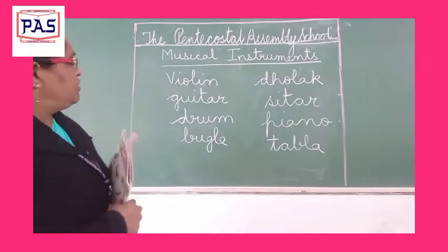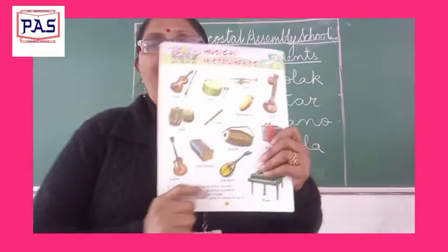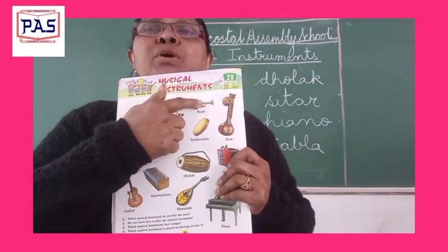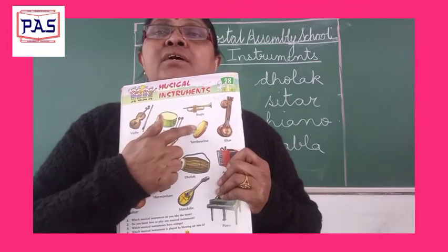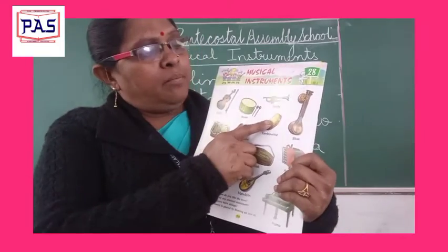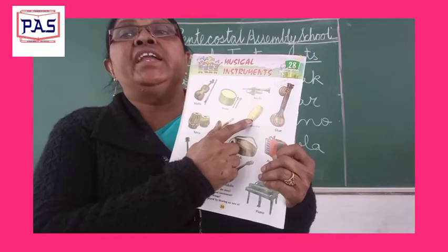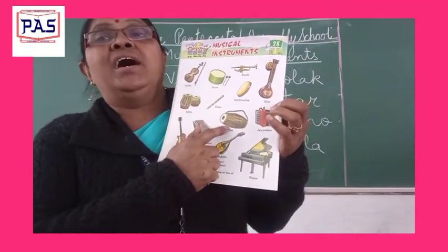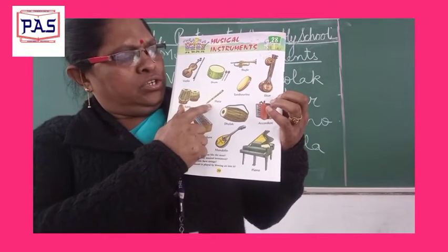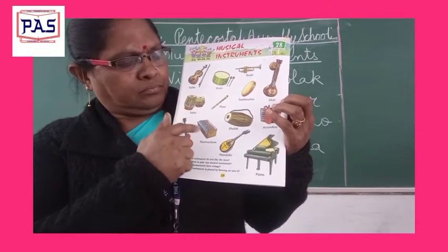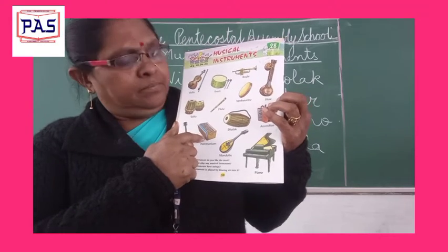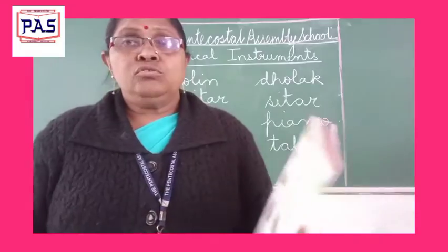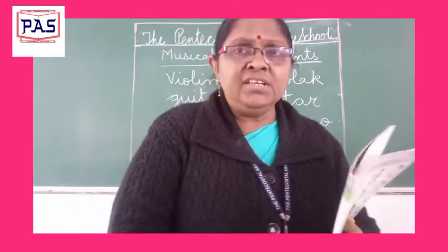So children you can see: violin, drum, bugle, sitar, tambourine, accordion, dholak, flute, tabla, harmonium, mandolin, and piano. So there are so many musical instruments.